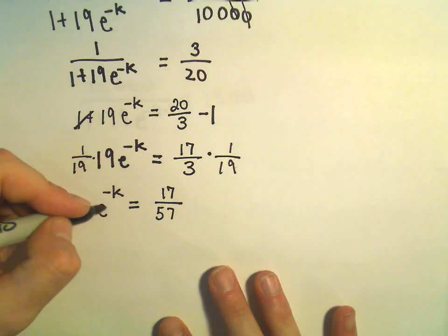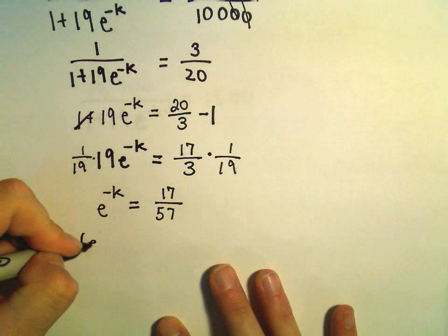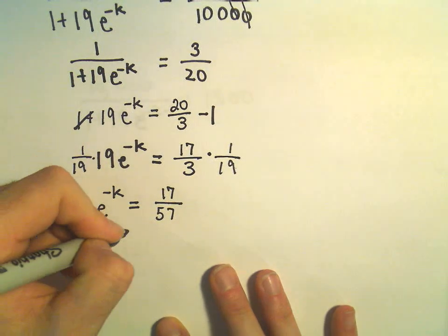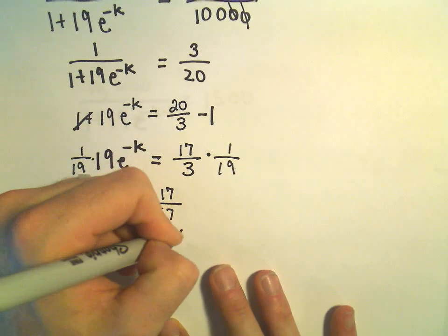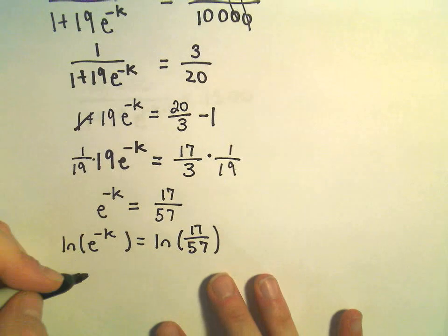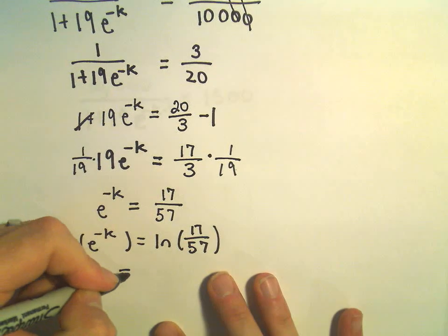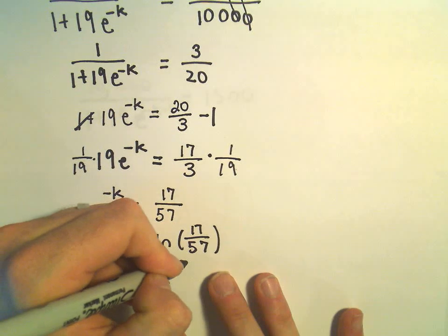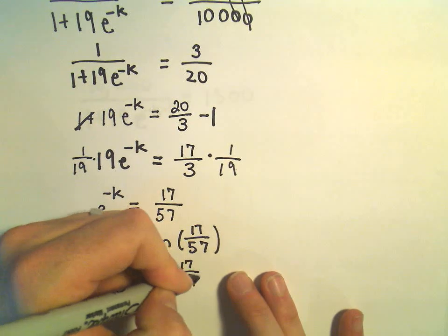To get rid of the e part, we can just take the natural logarithm of both sides. So on the left, we're just going to be left with negative k equals the natural logarithm of 17 over 57.